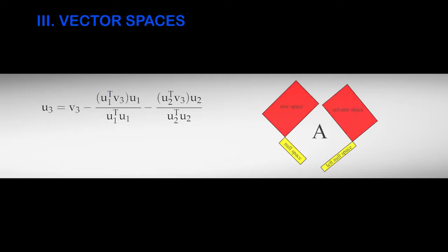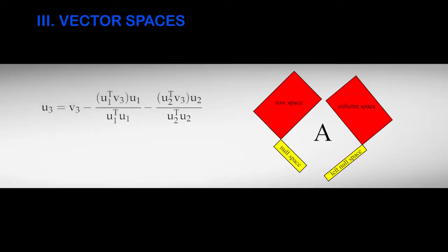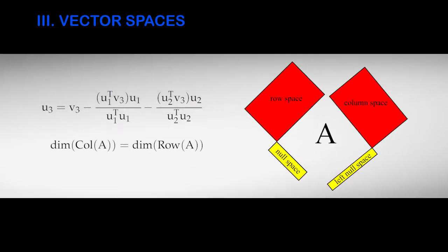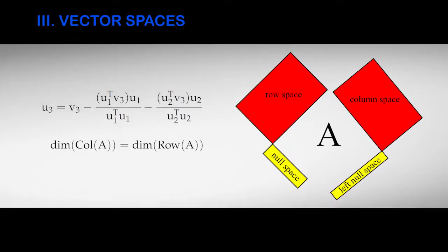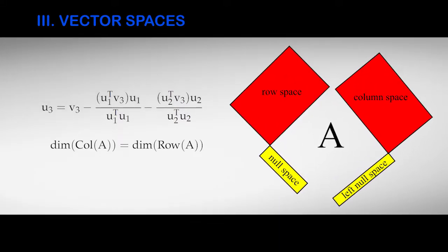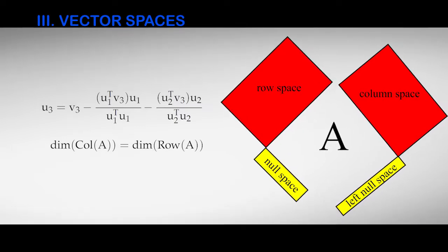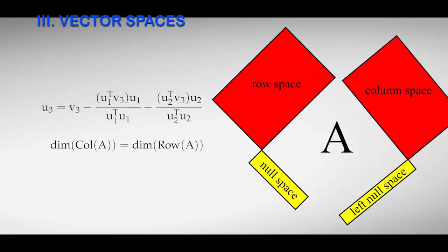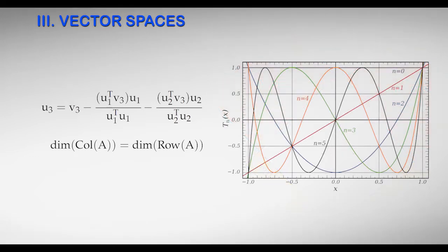In the third module, we'll become more abstract and learn about vector spaces and the vocabulary of linear algebra. These abstract concepts are widely used, and will make it easier to understand more advanced engineering mathematics, such as Fourier analysis and orthogonal polynomials.